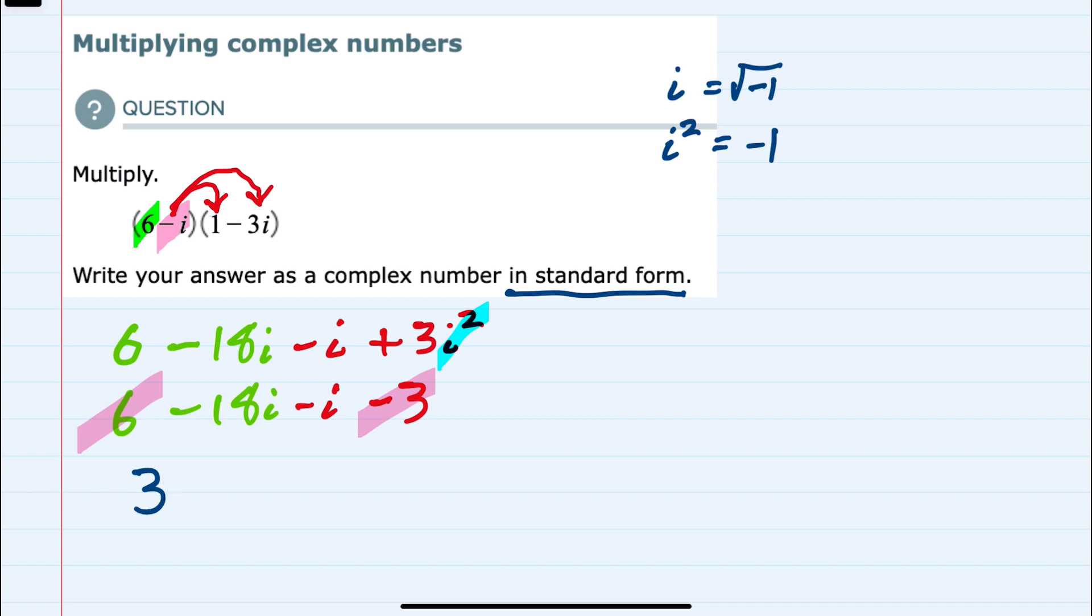And then for the complex portions here, we have minus 18i minus a 1i. So those can be combined as a minus 19i. And this is in standard form, so our solution is 3 minus 19i.